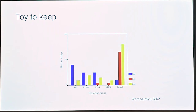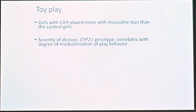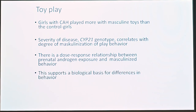We also gave a present when we left — the toy to keep — and the same picture emerged: more boys' toys chosen on the severe side, with the first doll appearing for the simple virilizing form and then the mild form. In control girls, only two chose a car. We can say that girls with CAH played more with masculine toys than control girls, and the severity of the disease correlates with the degree of masculinization of behavior — a dose-response relationship, not a threshold effect — supporting a biological basis for these behavioral differences.